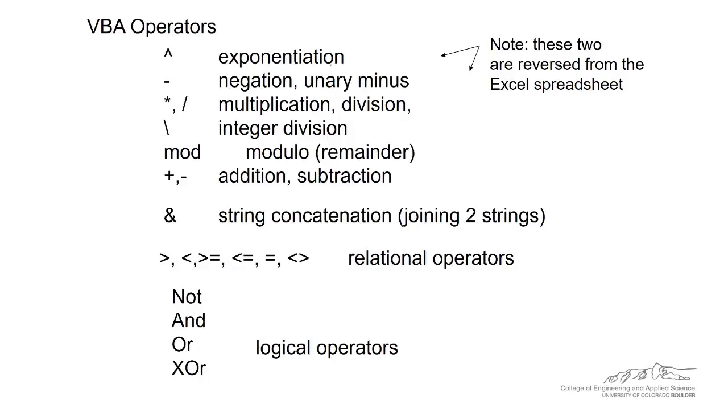Shown here on this slide, we have the order of operations. Exponentiation comes first. That's in contrast to Excel. Excel actually is unique in that it does negation first, so if you did negative three caret two in Excel, it would give you nine, which is a little counterintuitive. But it negates first, whereas in VBA it does the exponentiation first and then does the negation, so in VBA negative three caret two would be negative nine.